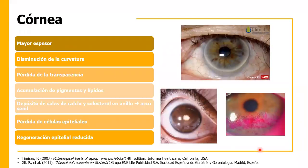Para empezar, la córnea conforme envejece va a adquirir mayor espesor y disminuir su curvatura. Va a surgir pérdida de la transparencia por acumulación de pigmentos y lípidos, entre ellos las sales de calcio y colesterol. Esto se le llama arco senil.